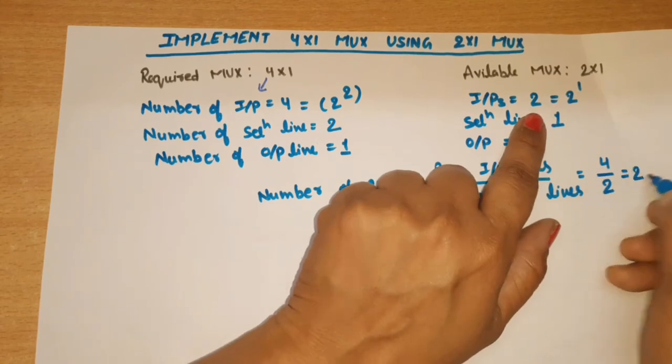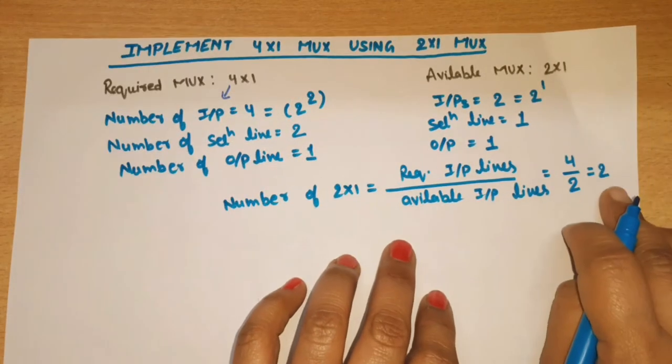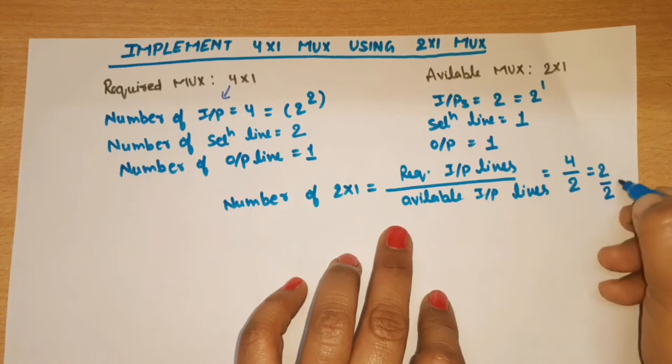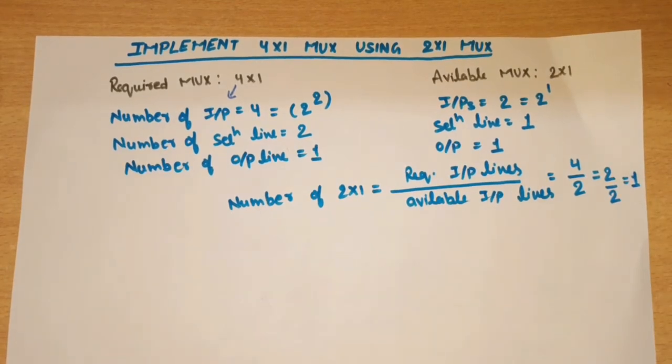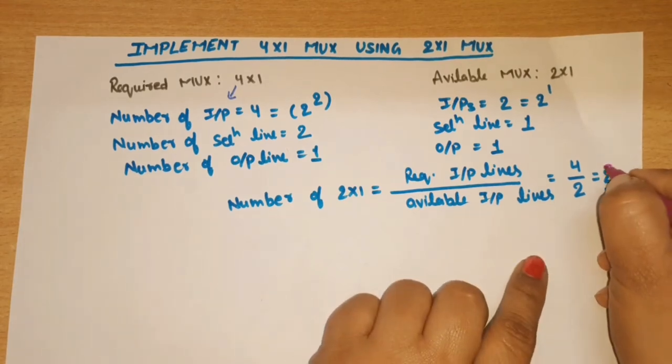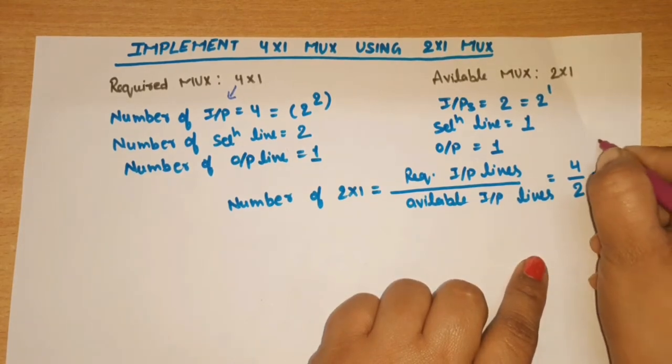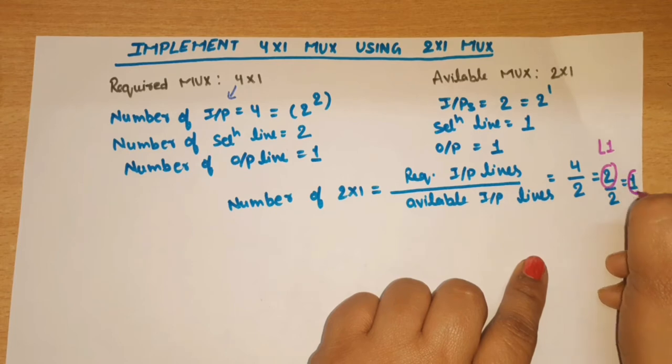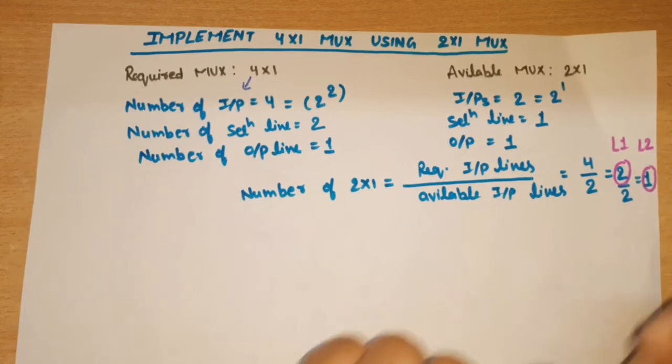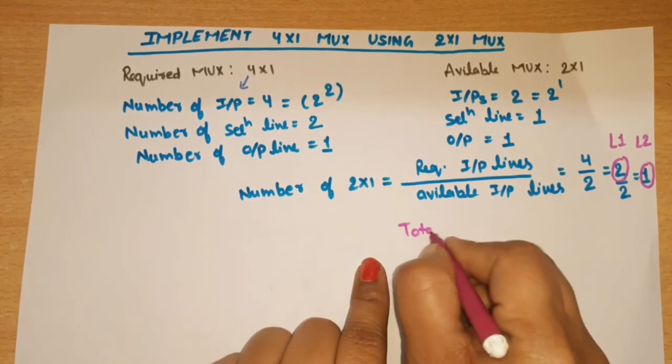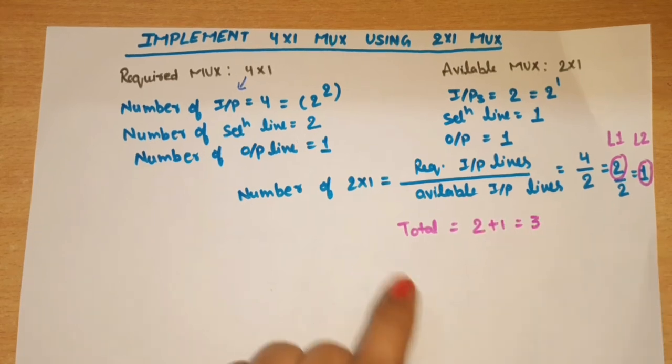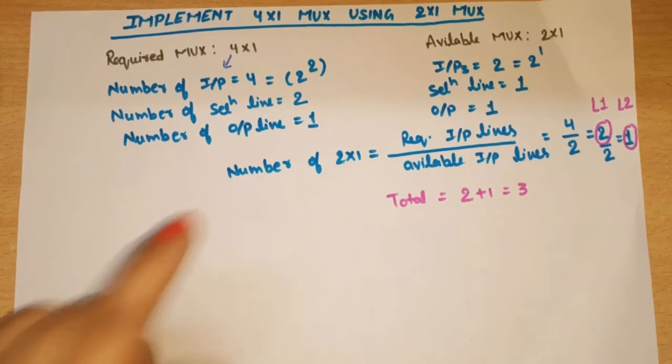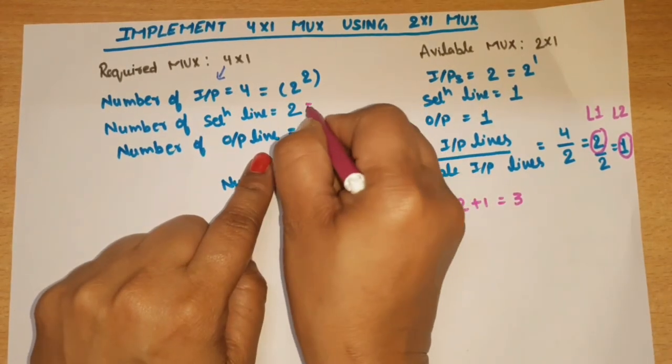Now this is not 1, so again we divide this 2, we get 1. This means at level 1, the first level will have this number of 2-to-1 MUXes. And this will be at level 2. So total we need is 2 plus 1 equals 3.